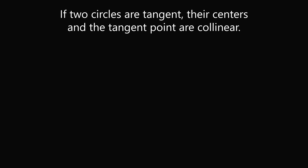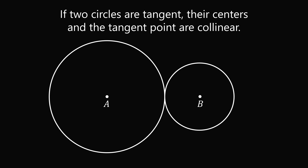Now let's review another concept. If two circles are tangent, their centers and the tangent point are collinear. Let's say we have circles A and B that are tangent at the point T. In order to show this, let's construct the tangent line going through T. Let's construct the radius AT — it will be perpendicular to the tangent line. But we also have that the radius BT will be perpendicular to the tangent line as well. So now let's look at the line ATB. We have two right angles at the point T, and therefore the measure of angle ATB will be 180 degrees — 90 plus 90. In other words, ATB is a straight line segment, meaning the centers of the circles and the tangent point are collinear.